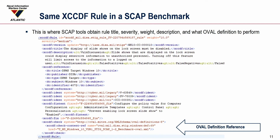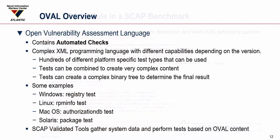Here is that same XCCDF rule in an SCAP benchmark. Most of the data points are exactly the same, but at the bottom there is a reference to an OVAL definition. This is definition 69, and it is in the Windows 10 benchmark OVAL document.